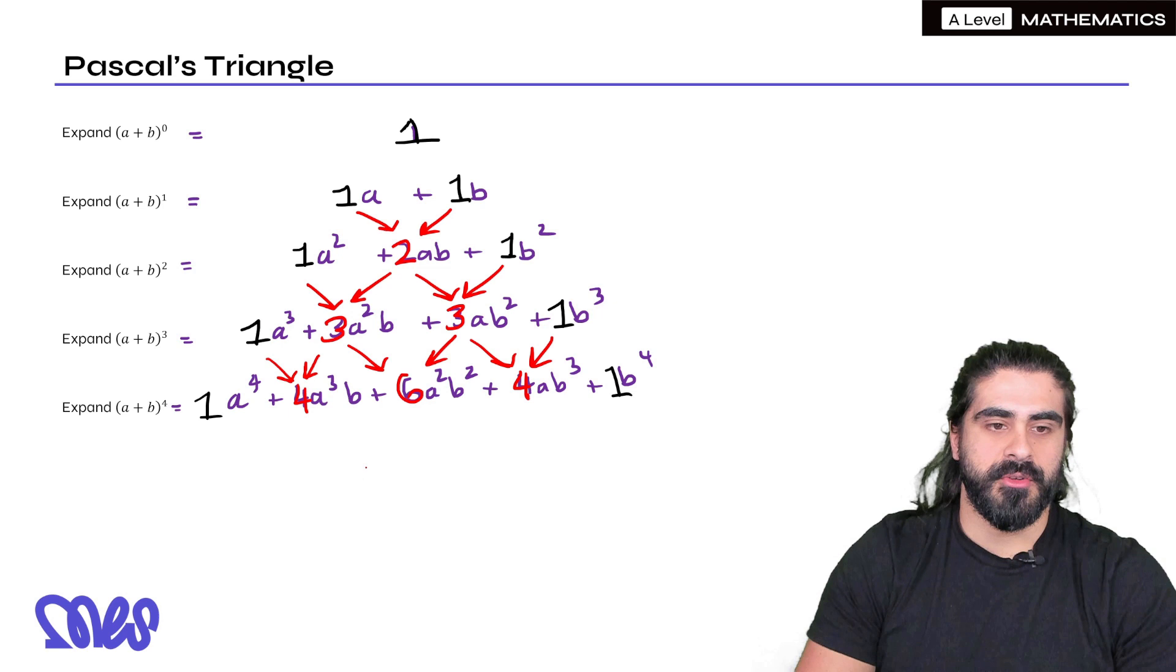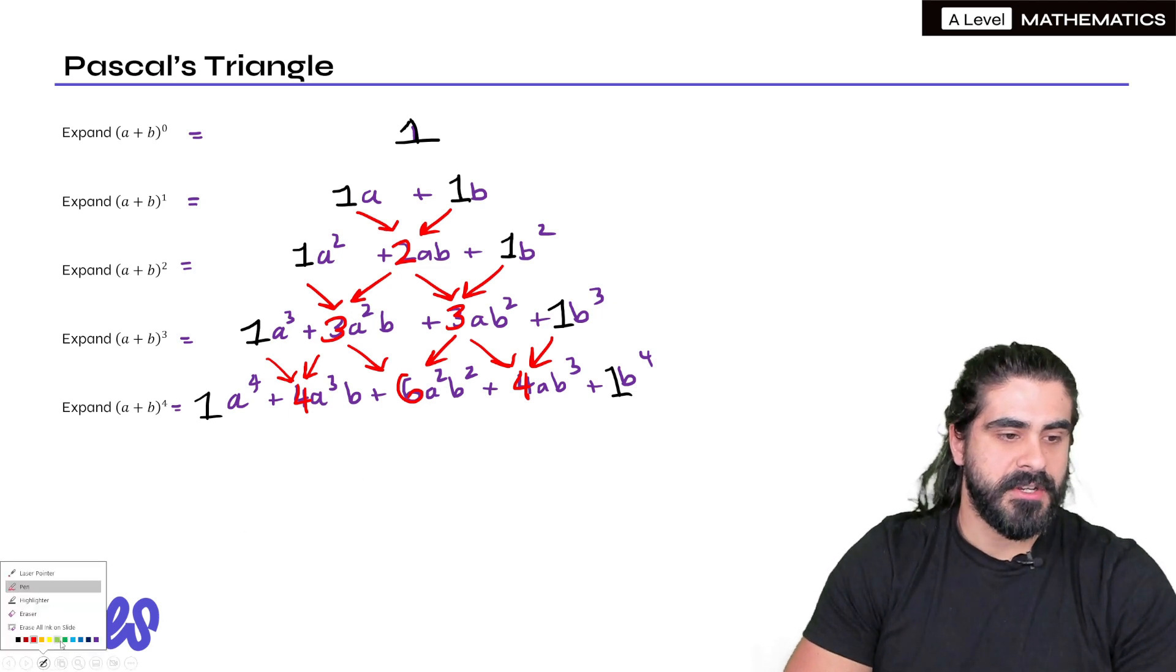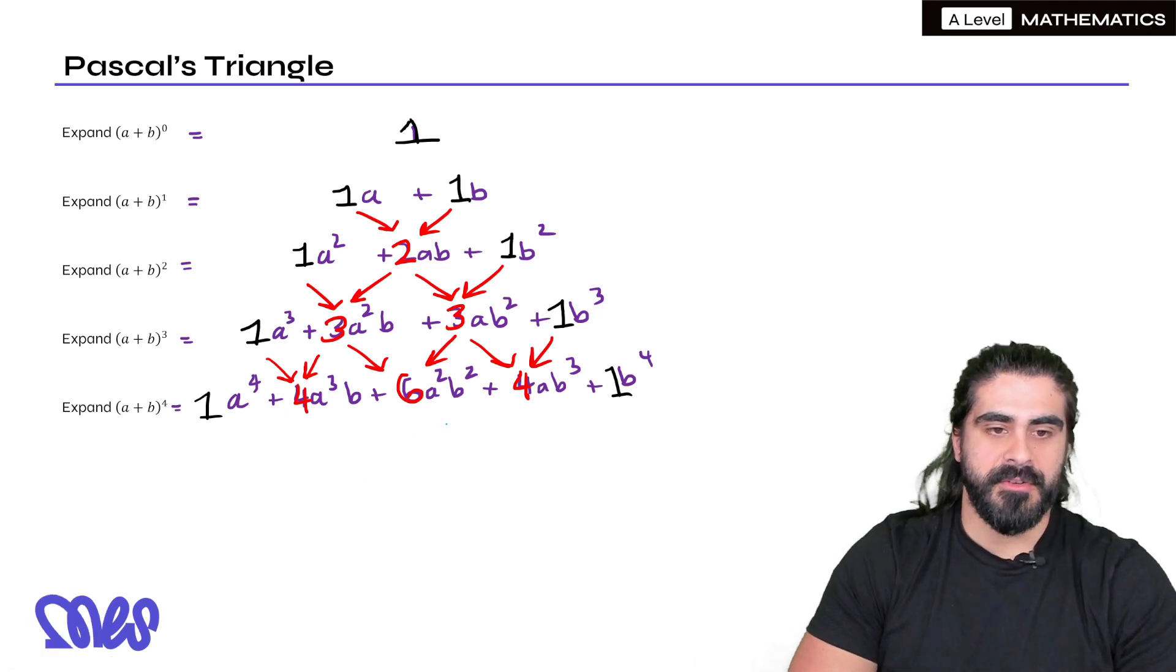So what would Pascal's triangle look like if you're going to do it fresh? It would look something like this. It goes 1, 1, 1, then 1. Add the two numbers: 2, 1. Then we have 1, 1 plus 2 is 3, 3, 1. Then 1, 4, 6, 4, 1.